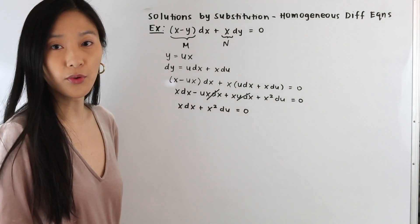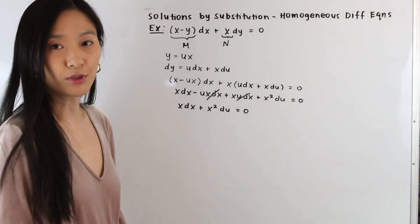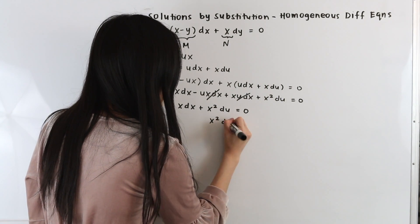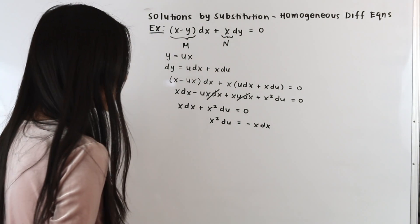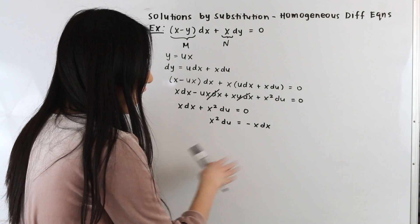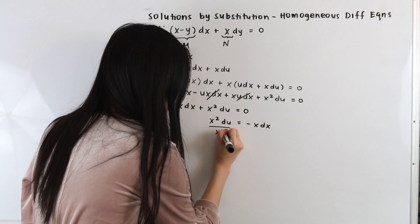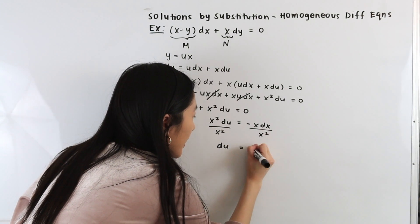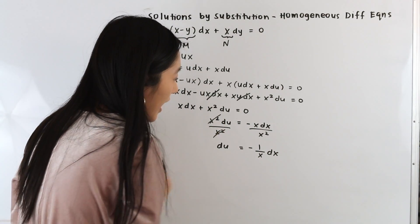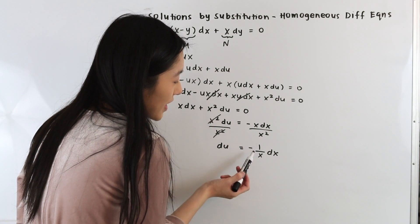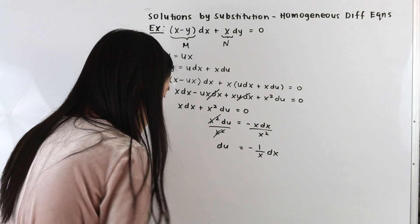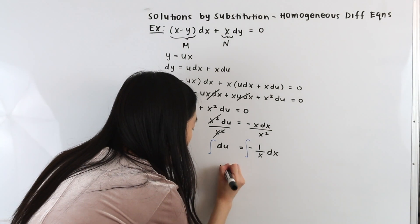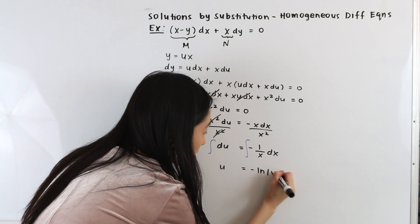This is a separable first-order differential equation. Using separation of variables, we subtract x dx from both sides to get x squared du equals negative x dx, then divide both sides by x squared. This gives du equals negative 1 over x dx, since the x terms simplify. Integrating both sides, we get u equals negative the natural log of the absolute value of x plus C.